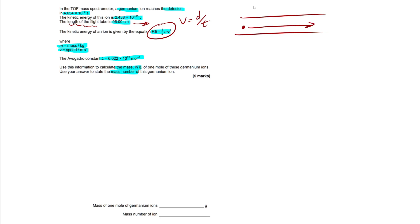We've got our ion flying down the flight tube to the detector — it's a fixed length, so that is our distance. The time taken is in seconds. So our velocity is in meters per second. If you don't know the equation for velocity, you can work it out yourself: it's just meters divided by seconds.